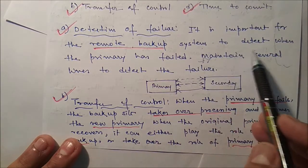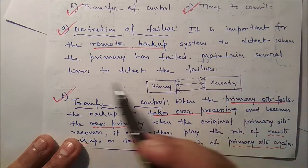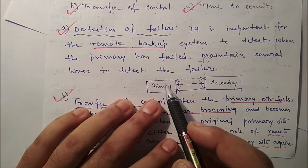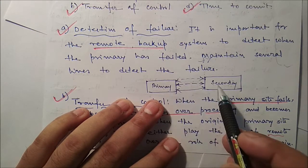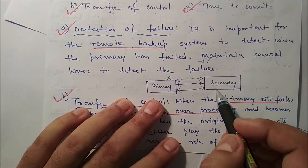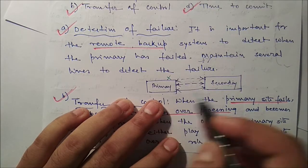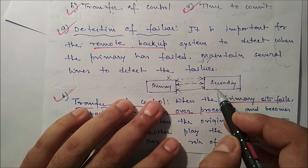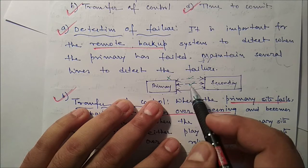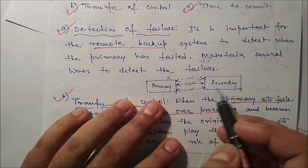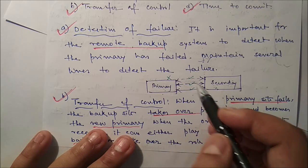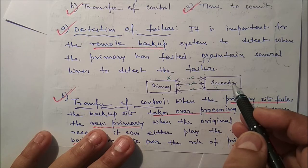First is detection of failure. It is important for the remote backup system to detect when the primary has failed and to maintain several communication lines to detect the failure. Every time we have to replicate data and transfer it from primary to secondary along with log files. When the primary site fails, the secondary site must know that there is a failure. Between the secondary and primary, several lines are there, and through these lines synchronization is established. If the primary site fails, the secondary site gets information from the various lines and then takes the necessary actions.